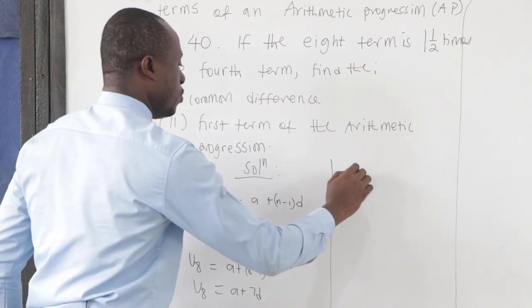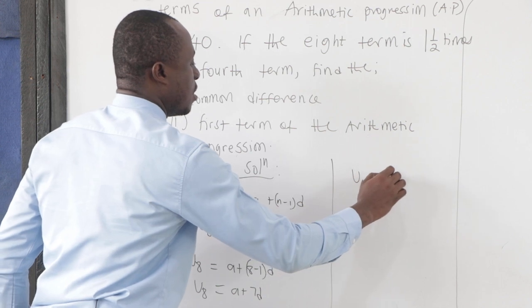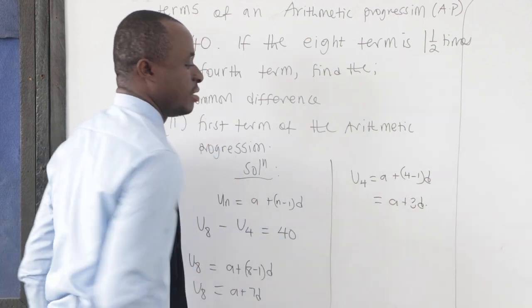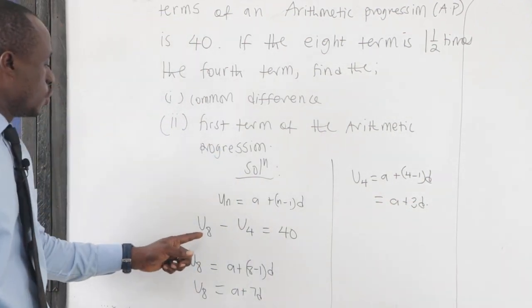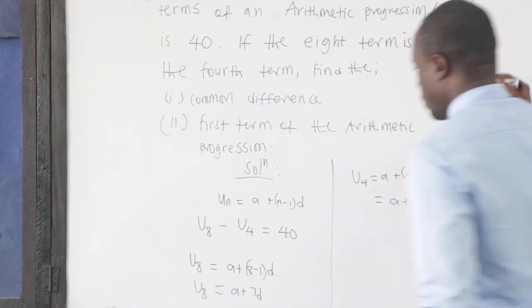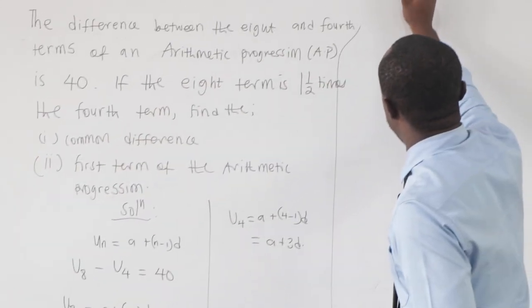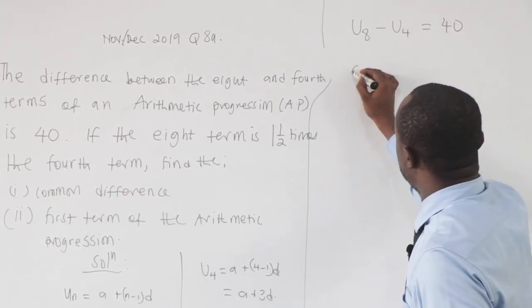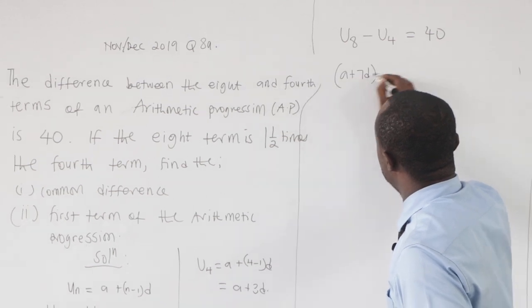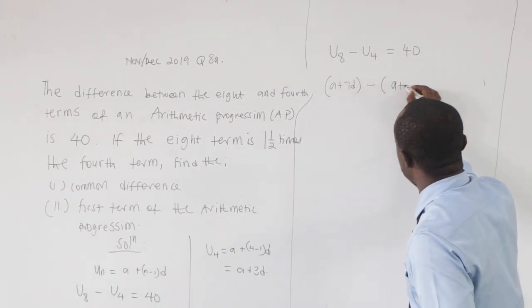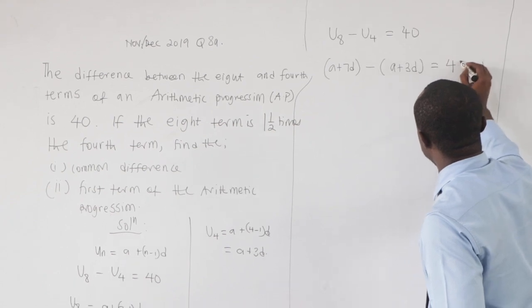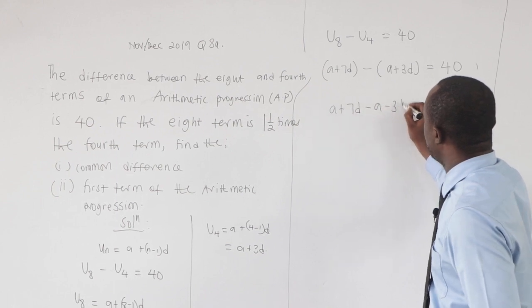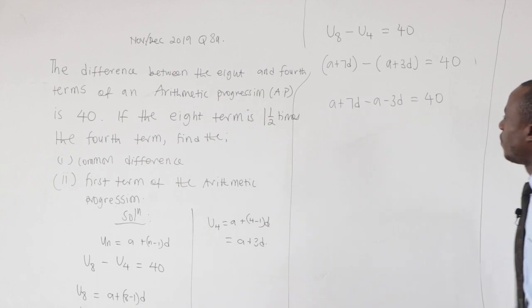Now what is our 4th term, u_4? That is a + (4-1)d, which is a + 3d. Now we have been told that the difference, so u_8 - u_4 is 40. What is our u_8? It was a + 7d. What is u_4? It was a + 3d equal to 40.